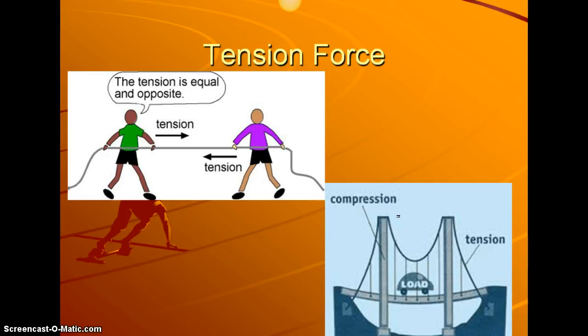If we look at tension force pictures here, the tension in this case is equal and opposite. Tension going with that string or rope being equal and opposite there, so they're not moving. And then we also can see tension force in this bridge picture at the bottom.